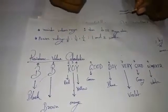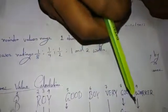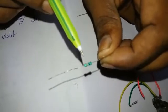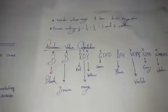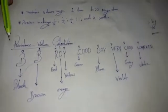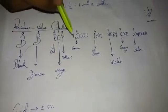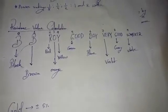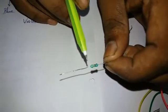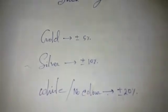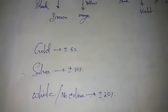For calculation, the carbon film resistor uses color bands. The color band camera reads the colors: black, brown, red, orange, yellow, green, blue, violet, gray, white. The tolerance bands are: gold for 5% tolerance and silver for 10% tolerance.